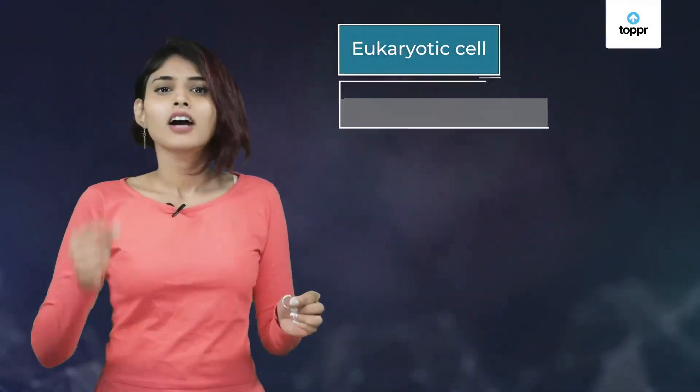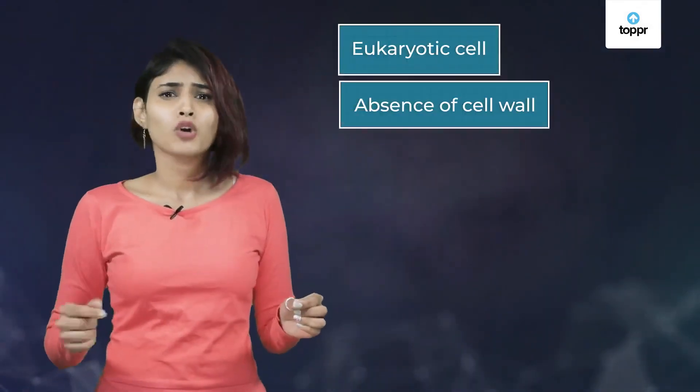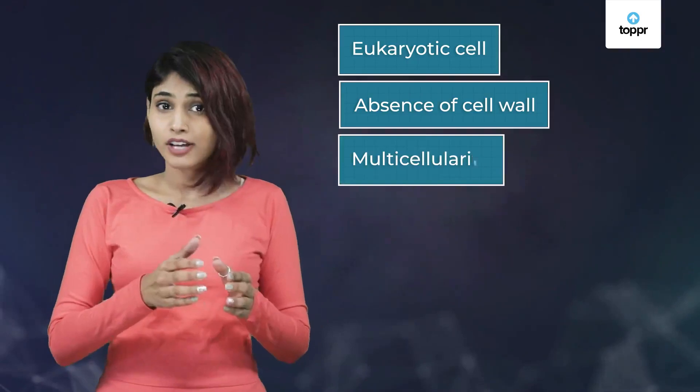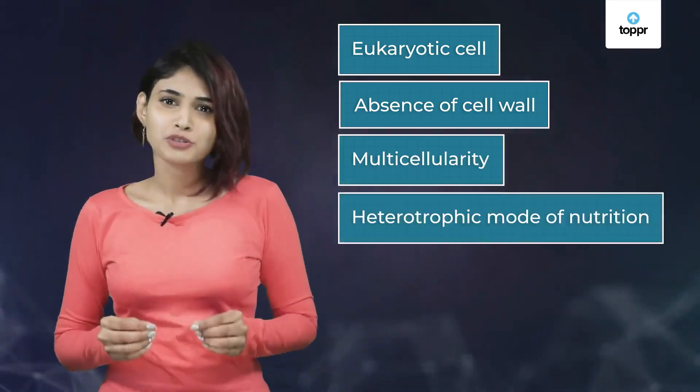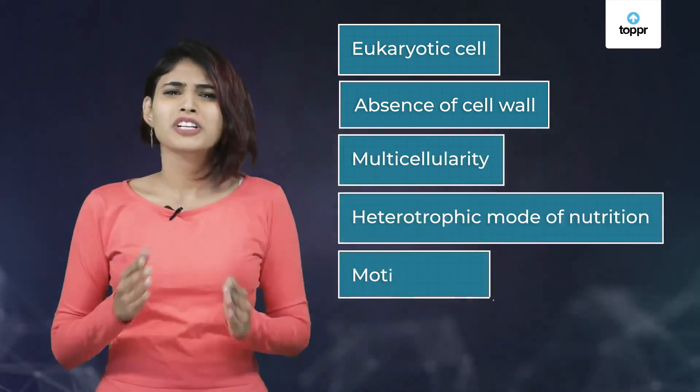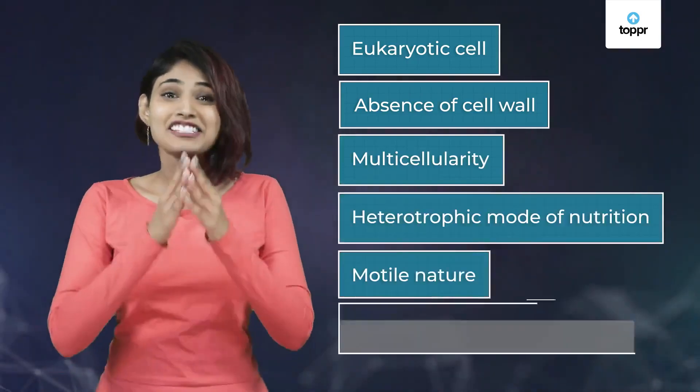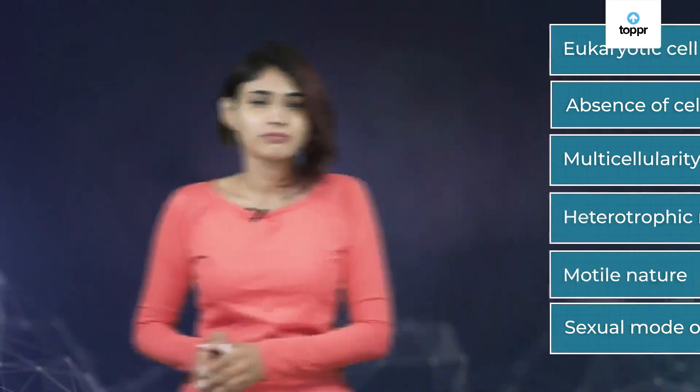These are all the characteristics of the Animal Kingdom: eukaryotic cell, absence of cell wall, multicellularity, heterotrophic mode of nutrition, motile nature, and sexual mode of reproduction.